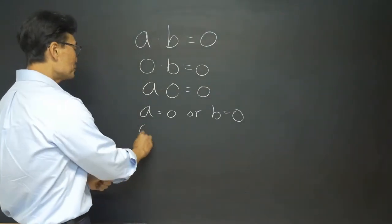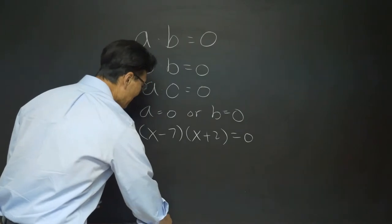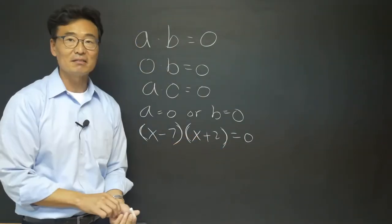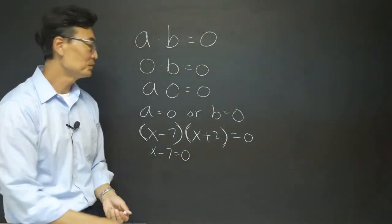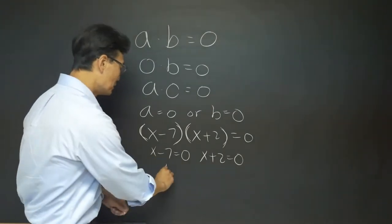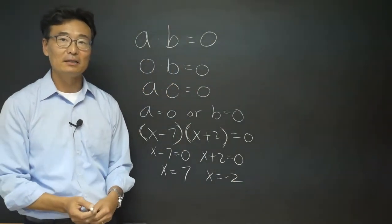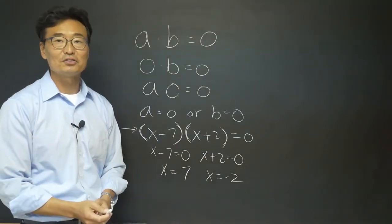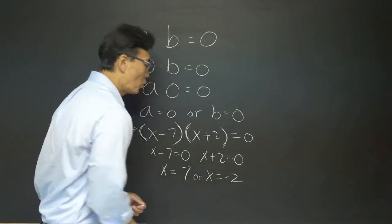If we were to have an equation (x minus seven) times (x plus two) is equal to zero, x minus seven is one factor and x plus two is the other. If we have two things multiplied and set equal to zero, it means either the first is equal to zero or the second is equal to zero. Solving gives us x equals seven from the first and x equals negative two from the second. So x is either seven or negative two.